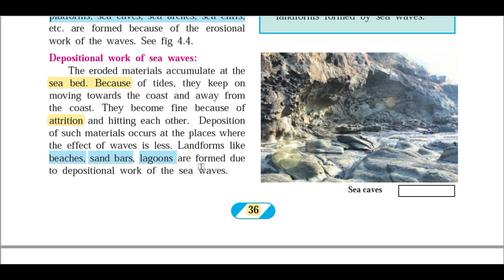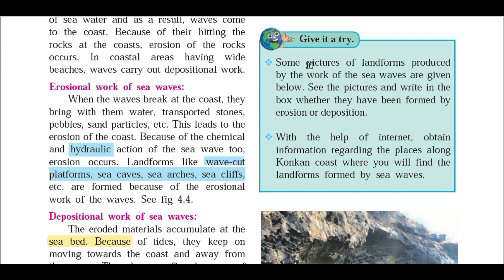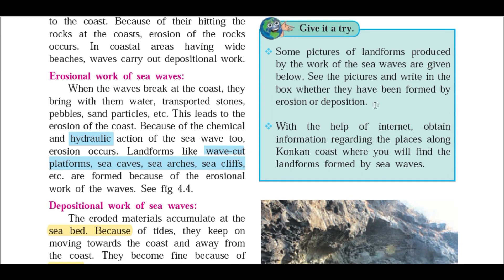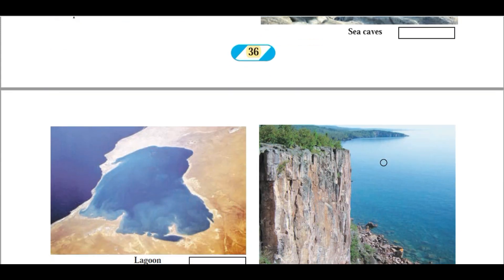Let's see some different landforms made by sea waves through pictures. Here you can see sea caves — observe this eroded portion caused by sea waves. When this part gets more and more extended beneath the rock of the mountainous portion near the seashore, it forms a cave. So sea cave is the result of the erosional work of sea waves.